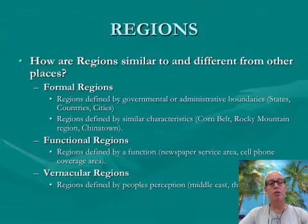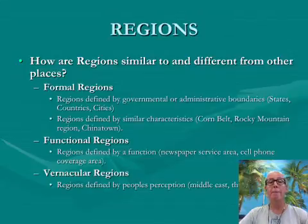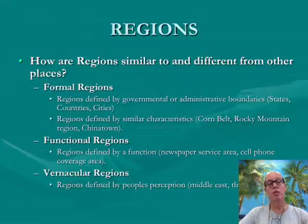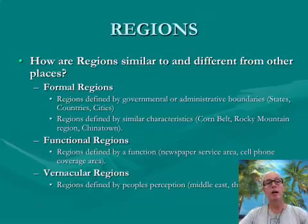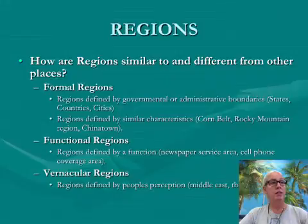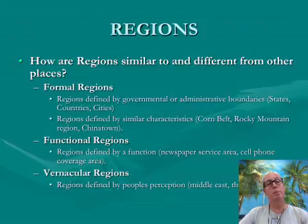Then there are vernacular regions — regions defined by people's perception. It could be something that you see or something that somebody else sees. Specific vernacular regions include places like the Middle East or the Arabian Peninsula. Some people might think it includes all of the countries on the peninsula, or they might think it only has a few. When we define the South, we're thinking of places like Georgia and Florida — and some people might include other places that others might not.